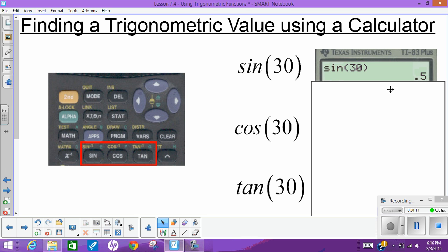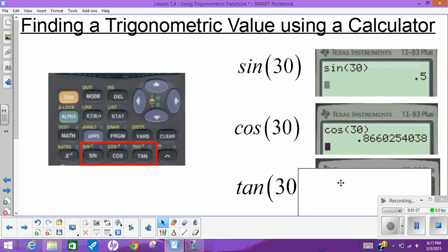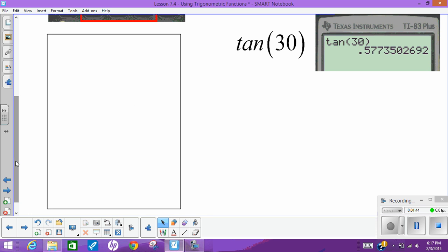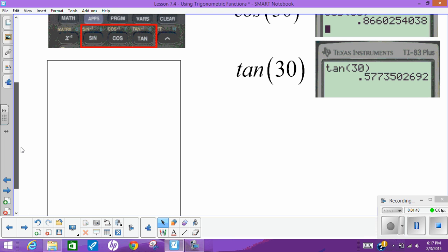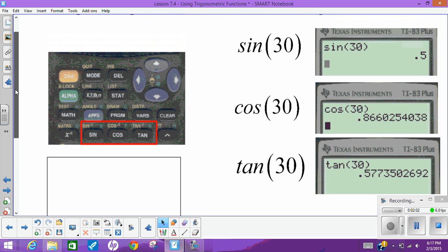So our opposite over hypotenuse is one half. Similarly, we can do the same thing with cosine. We can plug in cosine of 30 and we get this crazy decimal that probably keeps going on, and that represents the ratio of the adjacent length to the hypotenuse length. Lastly, we can find the tangent of 30 and we get another crazy decimal there, and that represents the fraction or the ratio of the opposite side length over the adjacent side length when we're talking about an angle of 30 degrees. So real easy calculating sine, cosine, and tangent of some angle in your calculator.